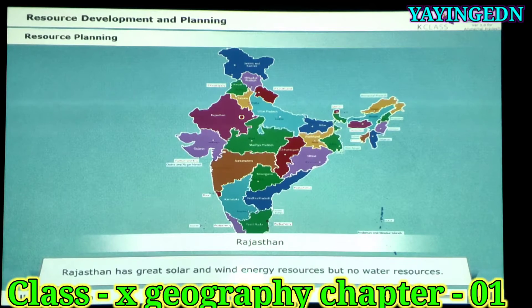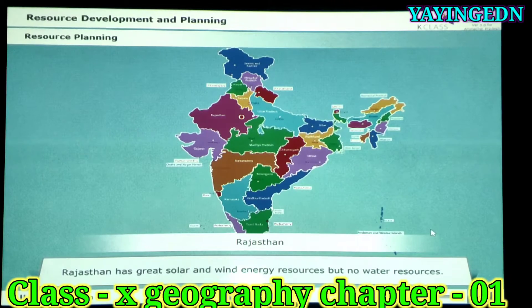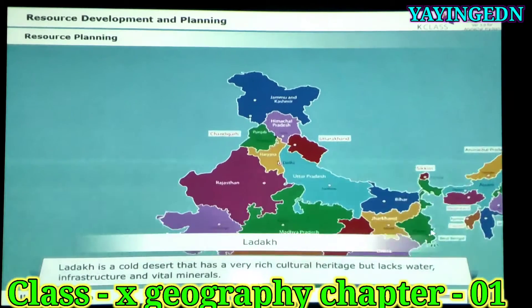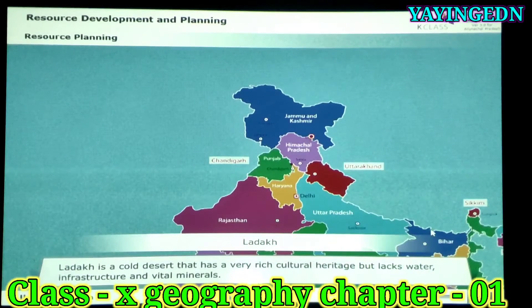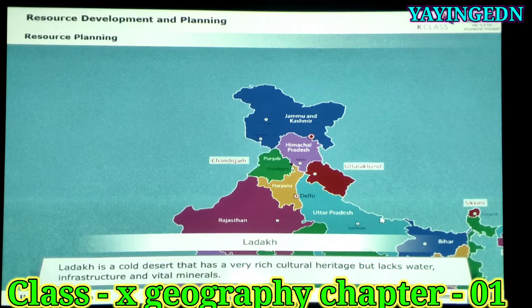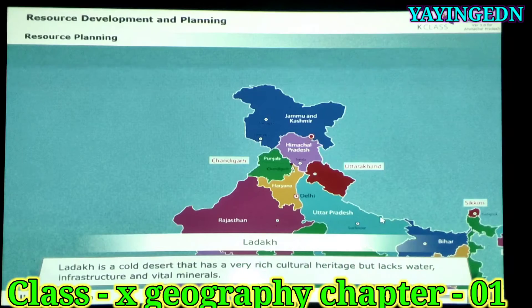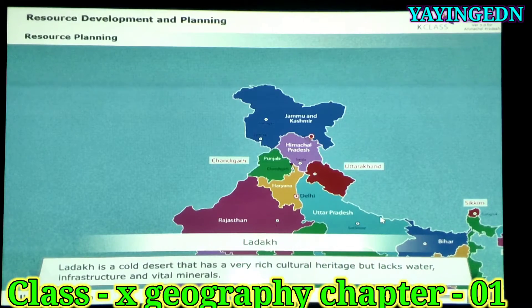Rajasthan has great solar and wind energy resources, but no water resources. Ladakh is a cold desert that has a very rich cultural heritage, but lacks water, infrastructure and vital minerals.